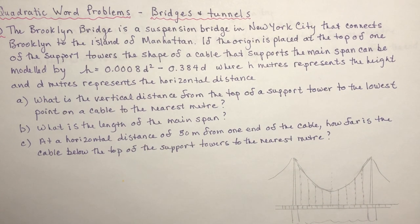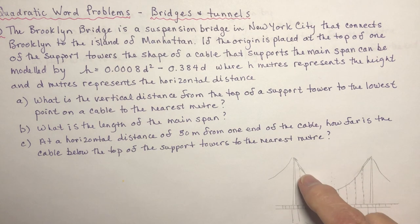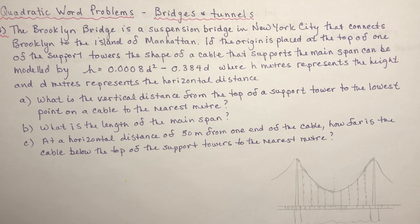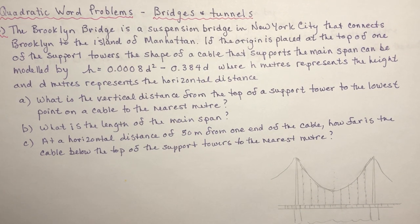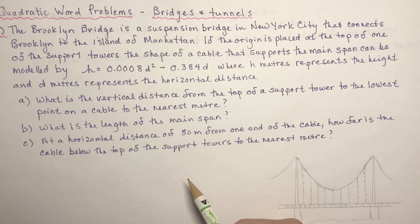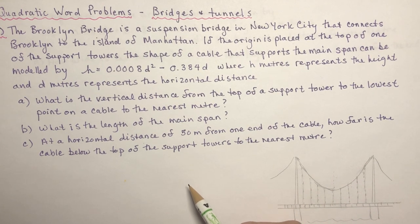Quadratic word problems: bridges and tunnels. I'm going to do three different word problems for you — one where it's a concave up parabola, one where it's a bridge with a concave down or a tunnel, and the last one is going to be one where we're trying to find the equation of the parabola and also see if we can pass a sailboat underneath the bridge. If these are the easy ones for you, you might want to skip down to number three.